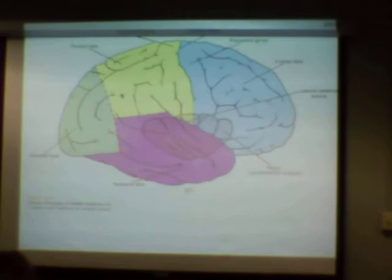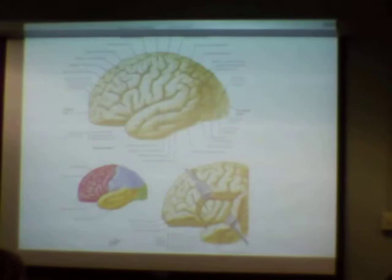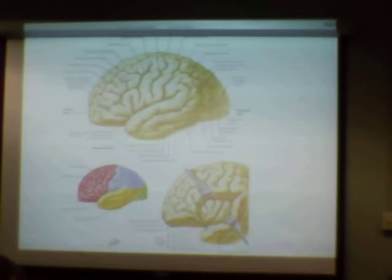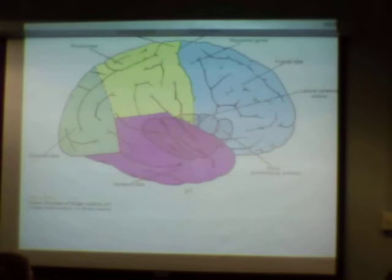We've got five major lobes of the cerebral cortex: frontal lobe, parietal lobe, occipital lobe, temporal lobe, and deep within the temporal lobe - if we peel that out and split the temporal lobe out - we can see a little lobe called the insula, sometimes called the island of Reil. It's not as convoluted as the rest of the other lobes. That's your fifth lobe, deep within the other lobes.